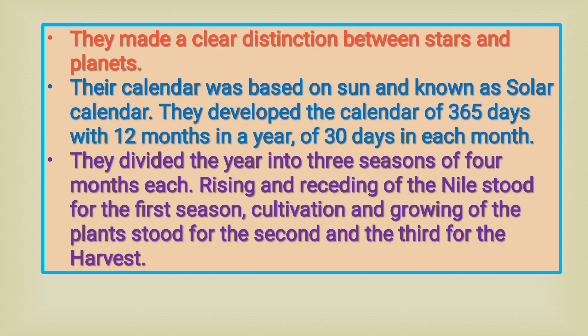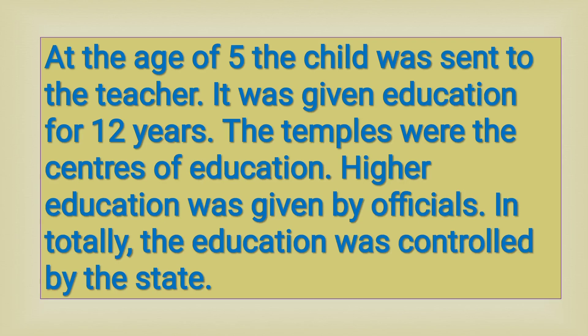They divided the year into three seasons of four months each. The rising and receding of the Nile stood for the first season, cultivation and growing of plants for the second, and the harvest for the third. At the age of five, the child was sent to the teacher and received education for 12 years. The temples were the centers of education. Higher education was given by officials, and in total, education was controlled by the state.